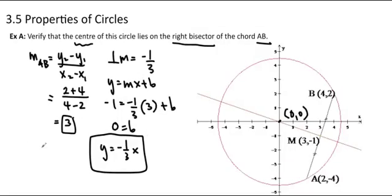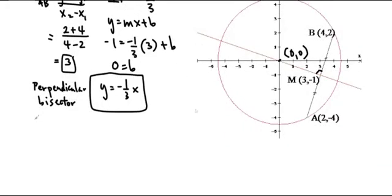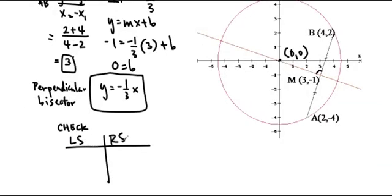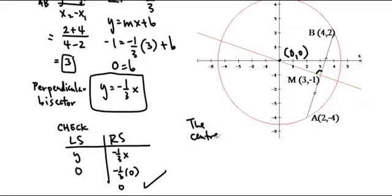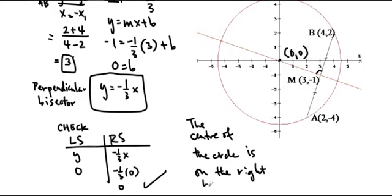That is the equation of our perpendicular bisector. Perpendicular bisector is the same thing as the right bisector — it just implies the right angle. So this is our right angle right here. We want to prove it goes through (0, 0). So we're going to do a check: left side and right side. You get y and negative 1 third x, and we plug in 0 and 0. So 0 equals negative 1 third times 0, which is true. Therefore, the center of the circle lies on the right bisector of AB.